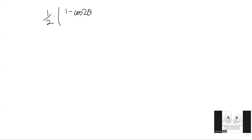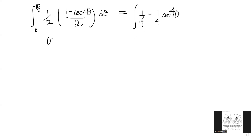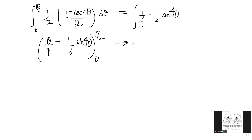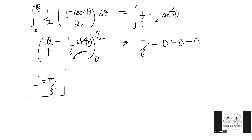We write ½ sin²2θ = ½ · (1 − cos4θ)/2 = ¼ − ¼ cos4θ. Integrating from 0 to π/2 gives θ/4 − (1/16) sin4θ evaluated from 0 to π/2. Putting in π/2: π/8 minus zero (since sin2π = 0). Putting in 0: everything vanishes. So i = π/8. Notice we never needed to worry about k specifically — treating it as α worked perfectly with this substitution.